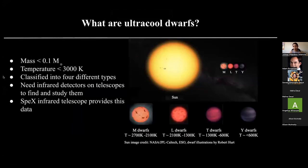So what are ultracool dwarfs? Well, their mass is usually less than 10% of our sun's mass. Their temperature is less than 3,000 Kelvin. The image to the right illustrates the size of an ultracool dwarf and the different types that exist. We have M dwarfs, which are the warmest, then L dwarfs, T dwarfs, and Y dwarfs, which are the coolest. These are an object of interest because they are so dim that we cannot see them with our eyes — we have to use infrared detectors on telescopes to find them, gather data, and study them.